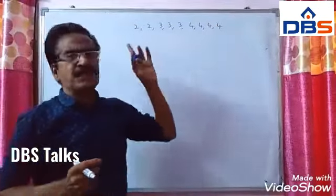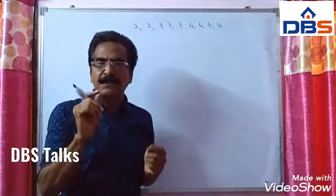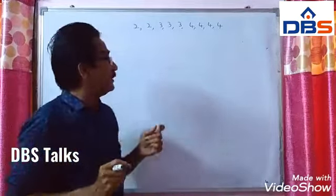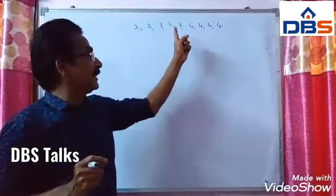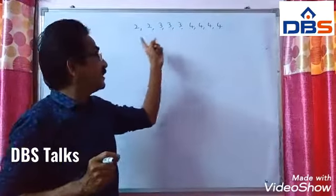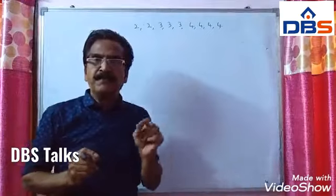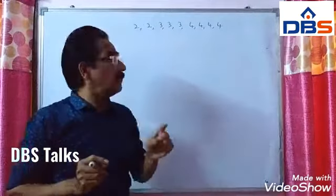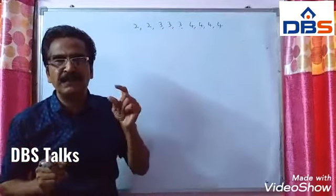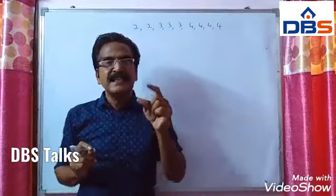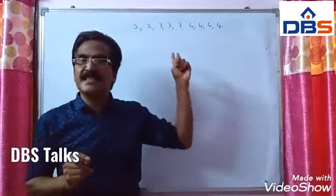How many four-digit numbers can be formed with the digits 2, 2, 3, 3, 3, 4, 4, 4 that are greater than 3,000?